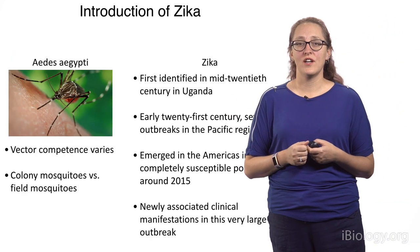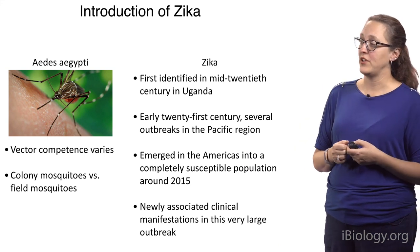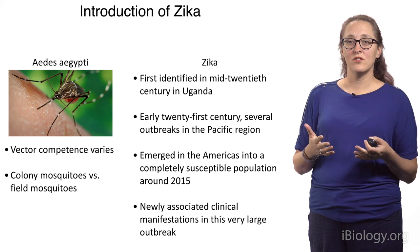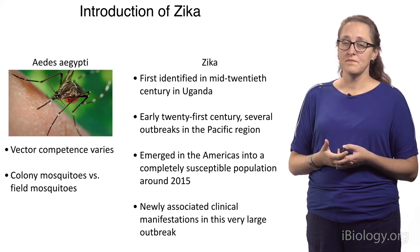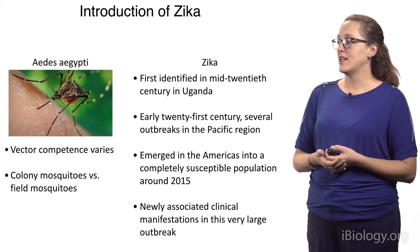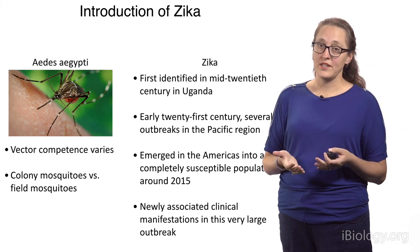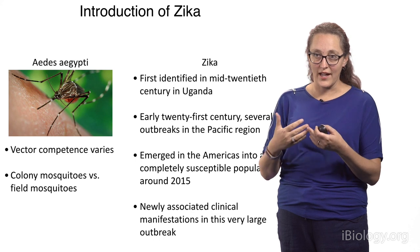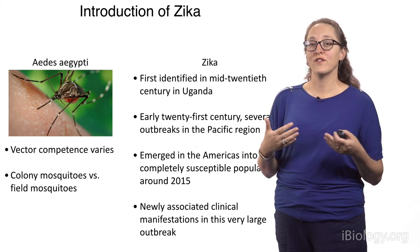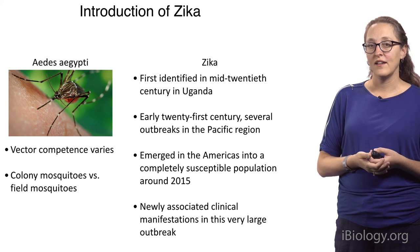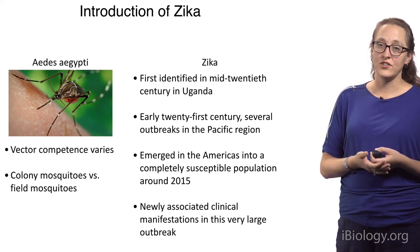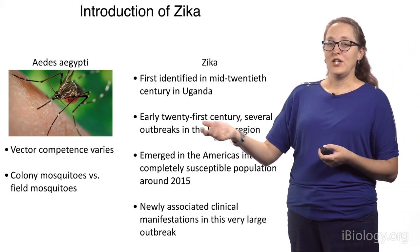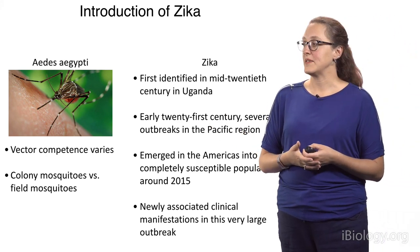Zika virus was first identified in the mid-20th century in Uganda. In the early 21st century, there were several outbreaks in the Pacific region. It emerged in the Americas into a completely susceptible population in 2015 — that's why it was such an explosive outbreak; everybody was available for Zika to infect. This is when we had the newly associated clinical manifestations in this very large outbreak. And again, we're going to use Aedes aegypti colony mosquitoes.